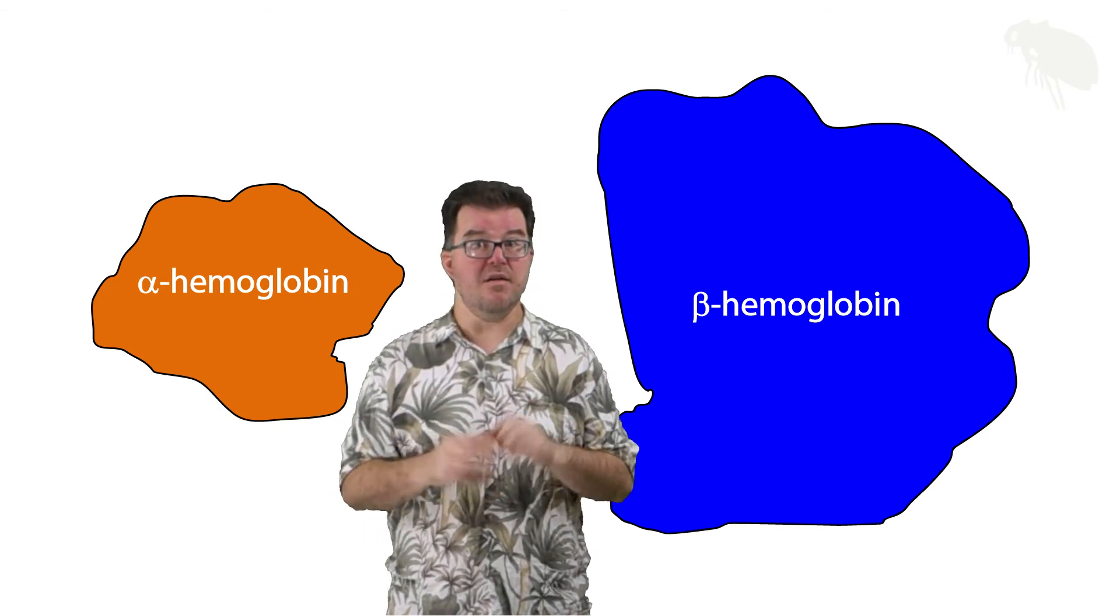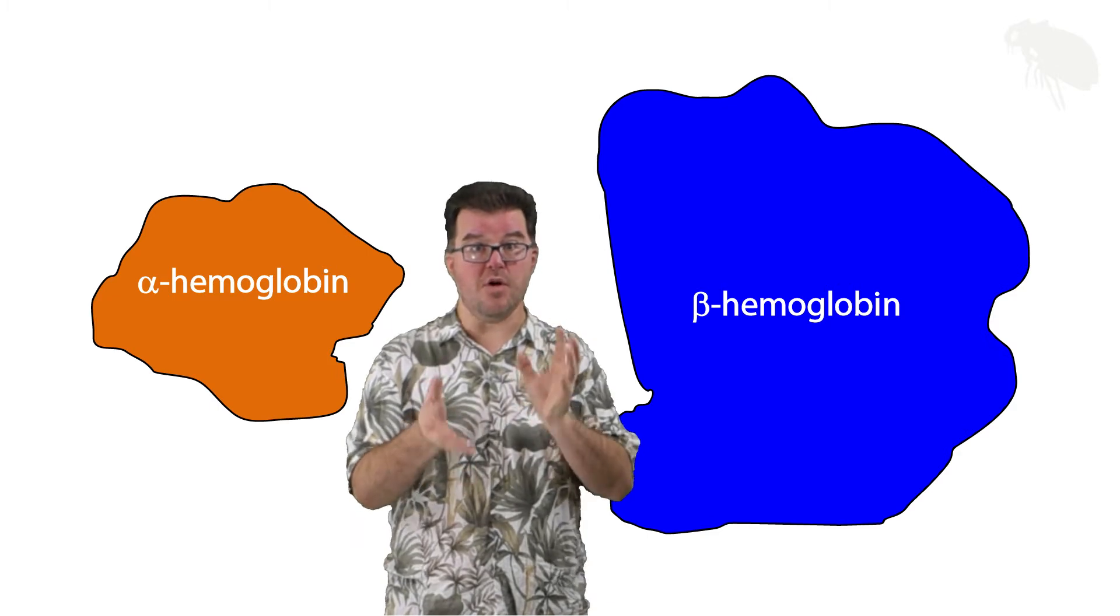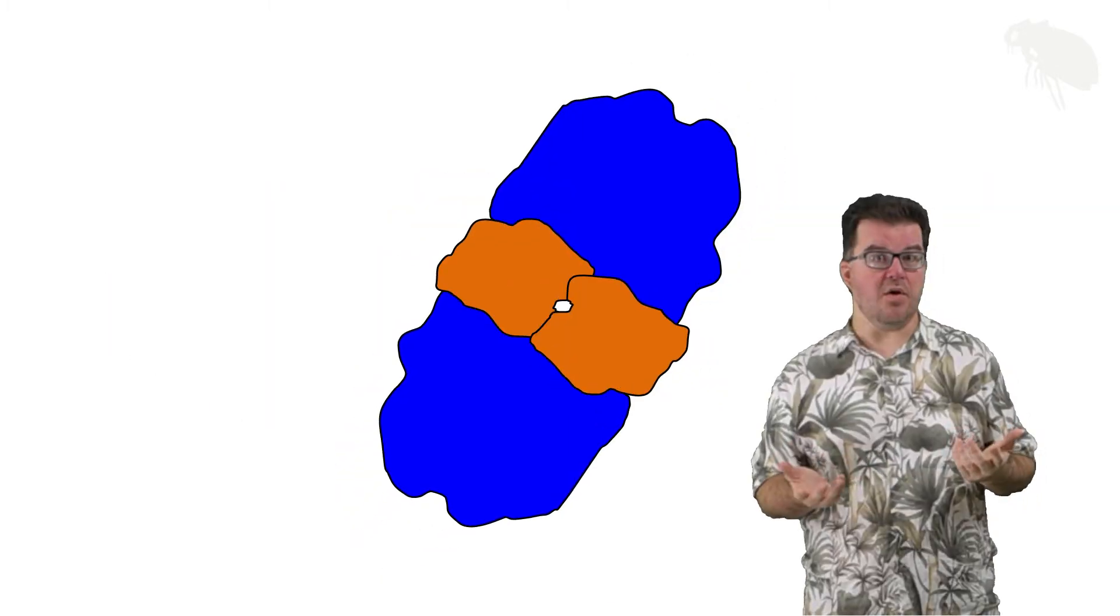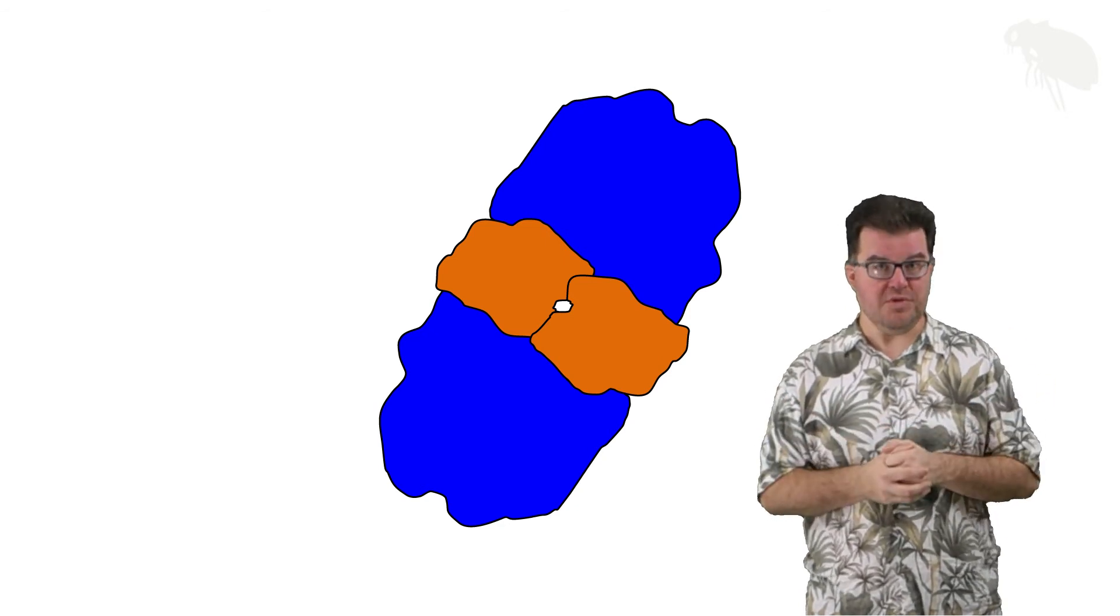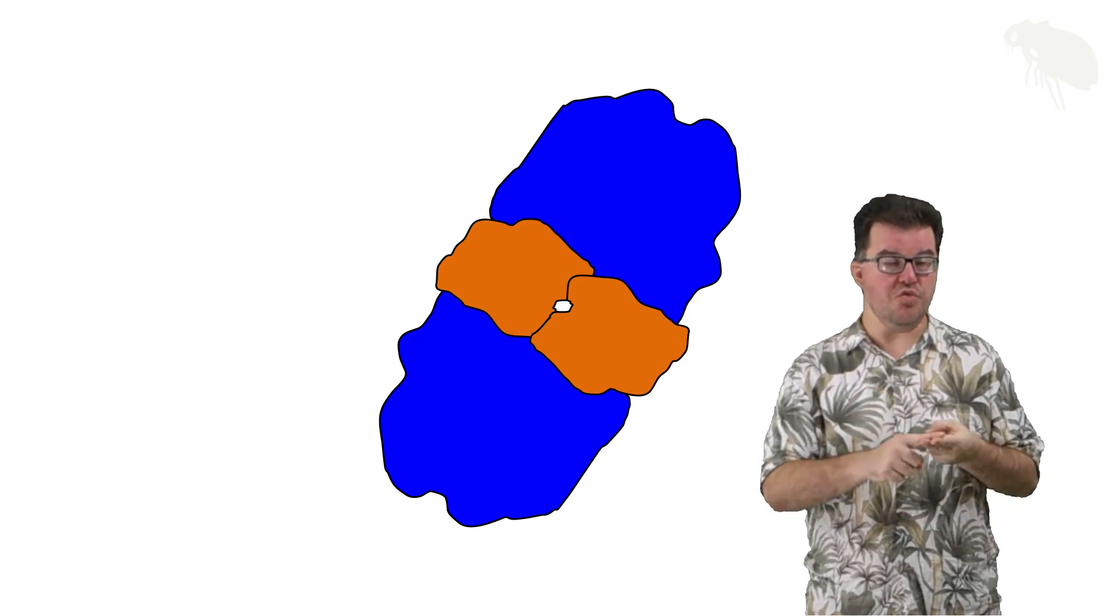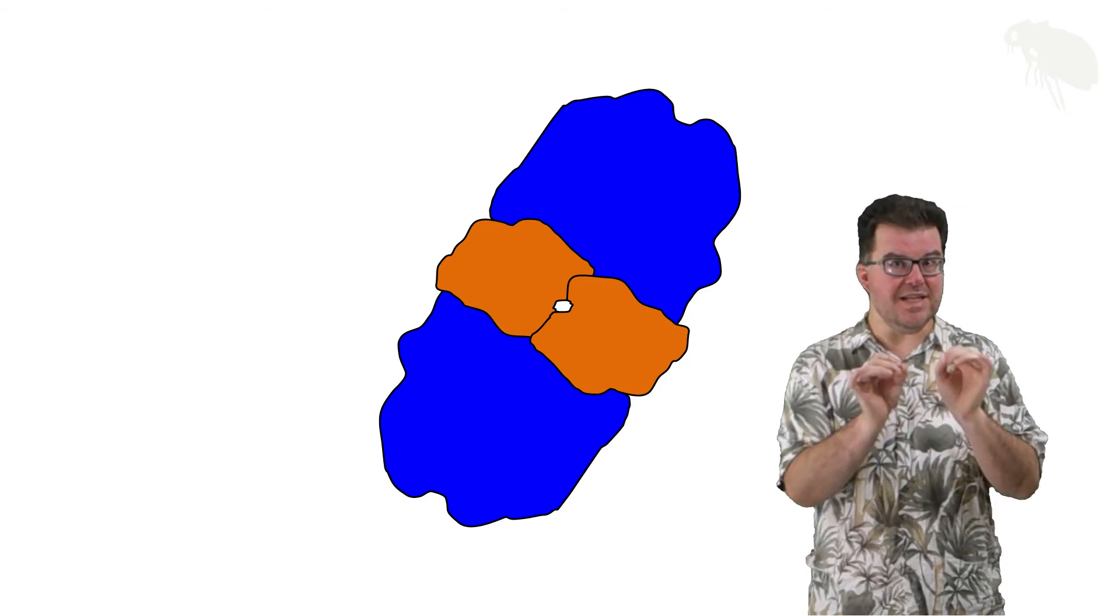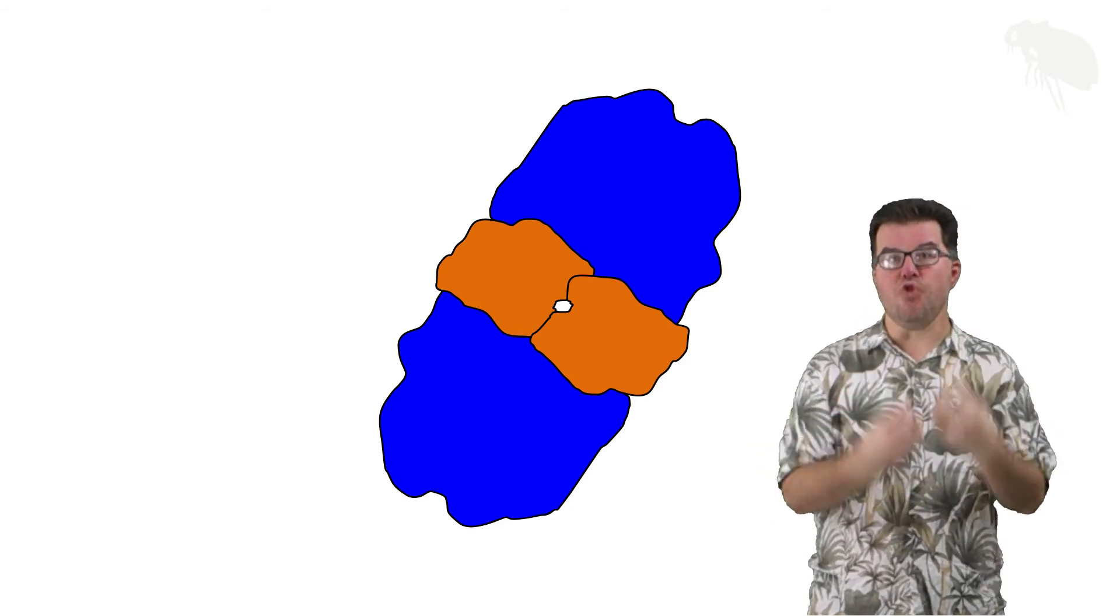So let's go ahead and assemble those four polypeptide subunits. All right, here we go. There is our functioning hemoglobin protein, rendered from two alpha and two beta subunits. Again, each of the subunits is an individual polypeptide.